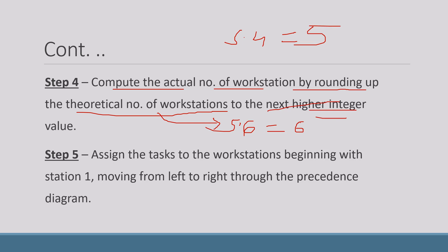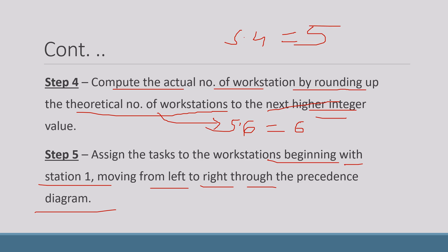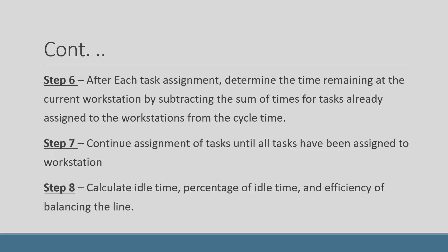Step 5 is to assign tasks to workstations, beginning with station 1 and moving from left to right through the precedence diagram. Preferences should be given to the important tasks first — those you identified in step 2. You assign those important tasks first, moving from left to right, and then assign remaining tasks to the other workstations.